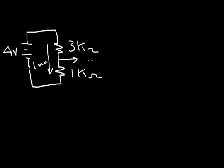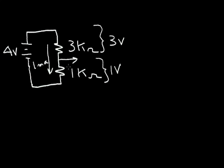We can calculate the voltage across the 1k resistor: one milliamp times 1k equals one volt. The voltage drop across the 3k resistor is one milliamp times 3k, which equals three volts. So if the resistors in the divider circuit are not equal, the voltage does not divide equally — the bigger resistor drops the bigger voltage and the smaller resistor drops the smaller voltage.